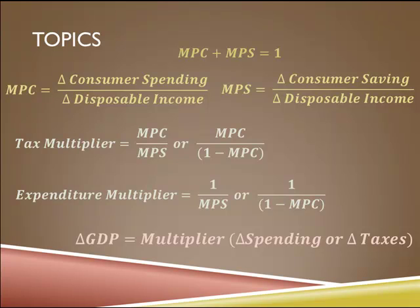The tax multiplier is used with a change in personal income taxes, and the spending multiplier is used with changes in spending. The formulas you need to know are shown on the slide. A delta or triangle symbol means a change in.